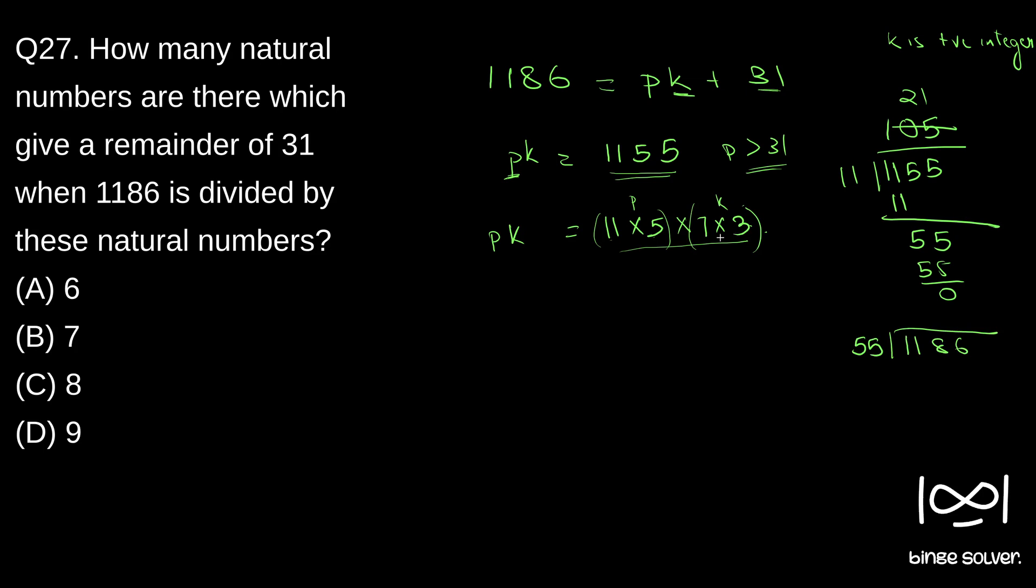Like if I take 1186 and divide it with 55, K will be 7 into 3×21, right? So 2, 110, 8, 86, 21, 55, we will get the remainder 31. So 55 into 21 is 1155 and we will get the remainder 31. So that is what it means.